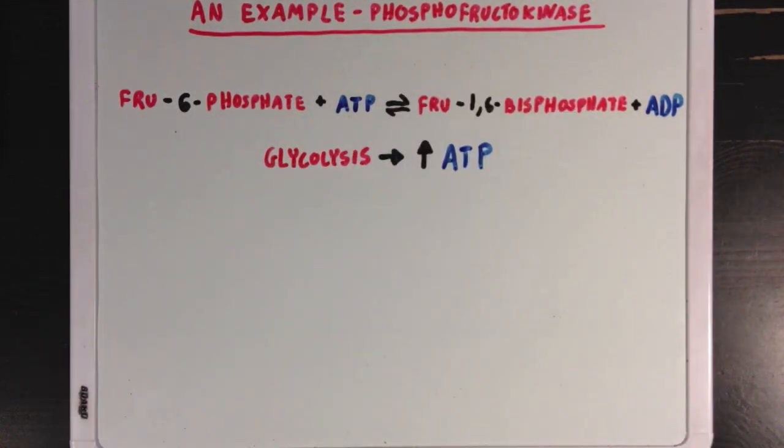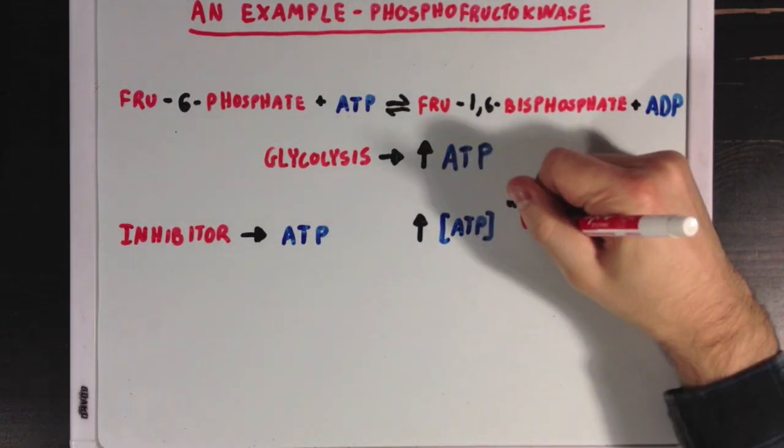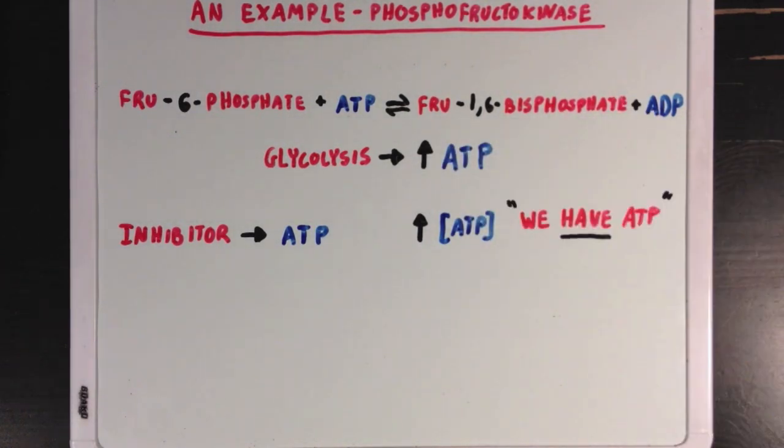So, here our molecule F, or downstream regulator from the last example, is ATP. And it turns out that ATP is an allosteric inhibitor of phosphofructokinase. And this makes sense, because if ATP is at a high level, then it's like the cell saying, we have ATP, and we don't really need any more. And we don't need phosphofructokinase to push glycolysis along.